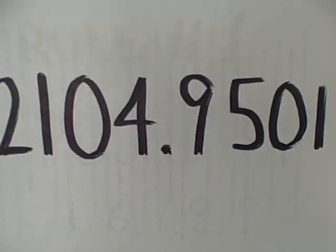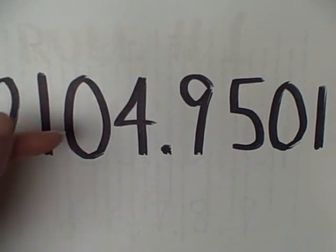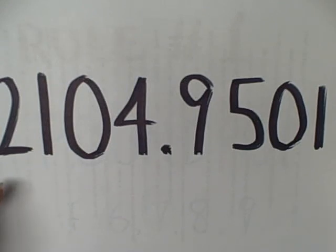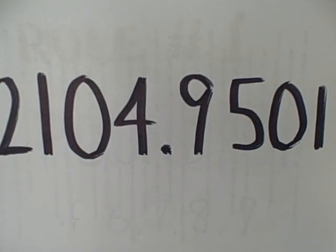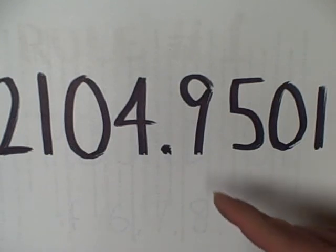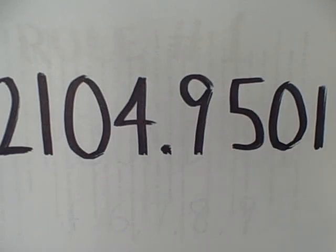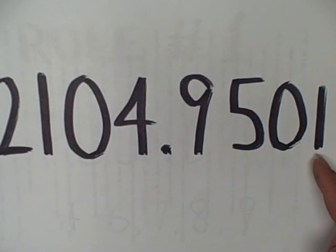Let's take an example. Here we have the number 2,104.9501. What's very important in all rounding is to remember the places that each one of these digits represents. The two represents the thousands place, the one is the hundreds place, this zero is in the tens place, the four is in the ones place, the nine is in the tenths place, the five is in the hundredths place, this zero is in the thousandths place, and this one is in the ten-thousandths place.